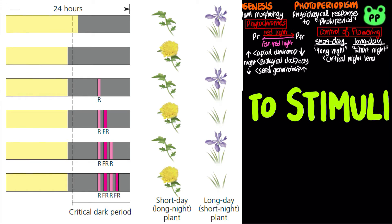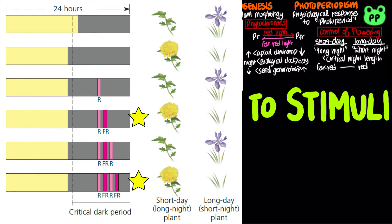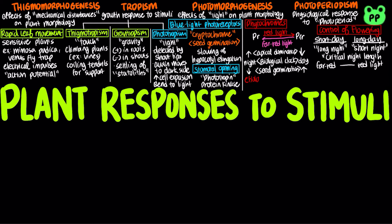Photoperiods are detected by phytochromes. Red light can interrupt the nighttime portion of the photoperiod, causing long-day plants to flower, whereas far-red light can reverse the effects of red light, causing a short-day plant to flower instead. Phytochromes also play a role in the deetiolation pathway, also known as the greening response.